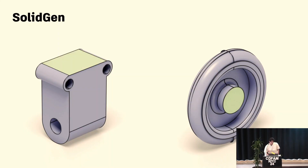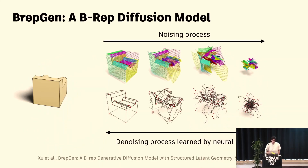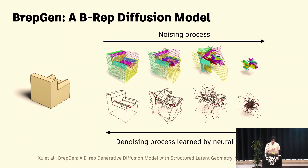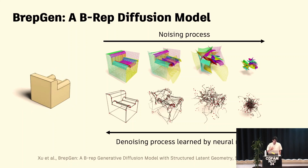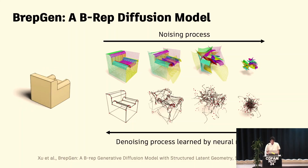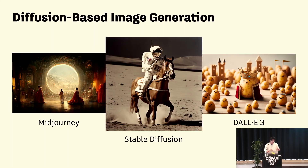The new work I want to talk about — presented at SIGGRAPH this year — is called BRepGen, done in collaboration with a student named Sam who is now working with us. This is the first B-rep diffusion model. You've probably heard of Midjourney, Stable Diffusion, or DALL-E — those are all image-based diffusion models that have taken image generation quality from something pretty rough in the early GAN days to something genuinely impressive.